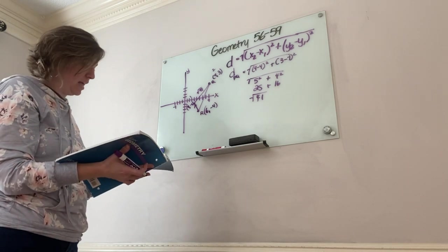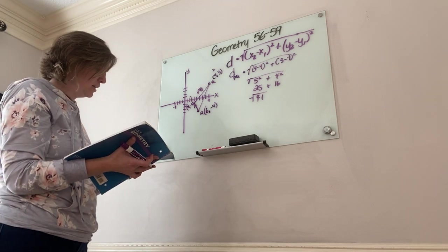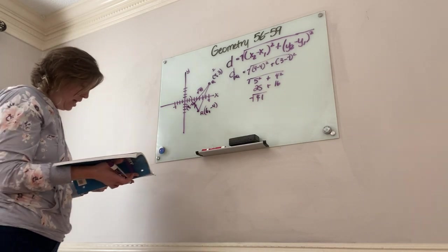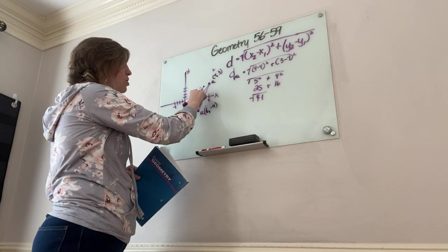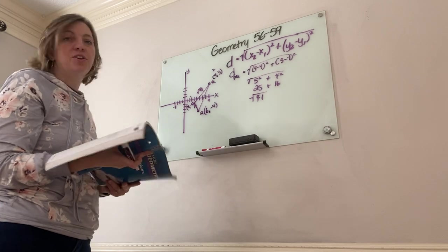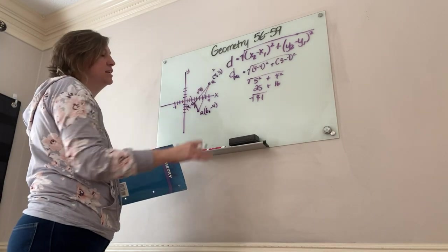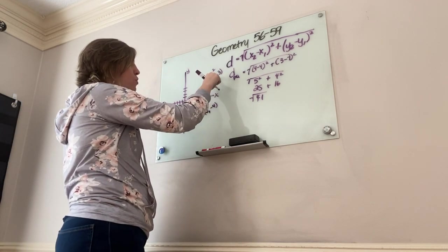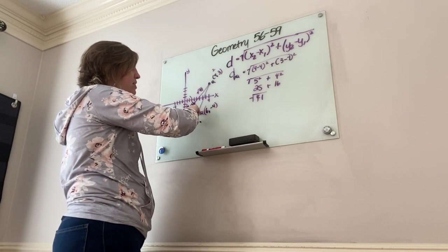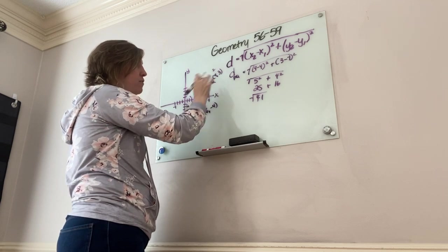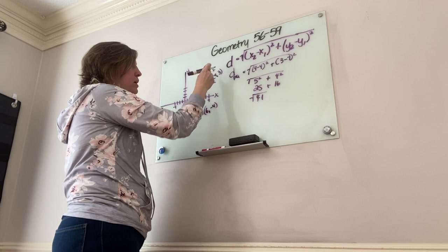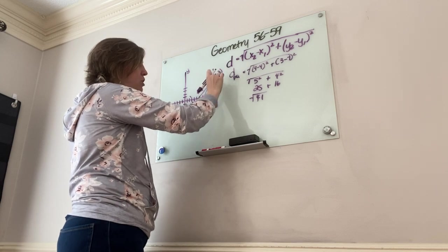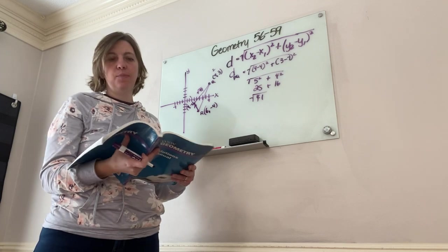The most important thing in Lesson 57 is watching the order of your coordinates. If you started with x₂ first (nine minus four), then you must also use y₂ first for the y-values. Students commonly mix up this order — I've seen it happen with slope calculations too.